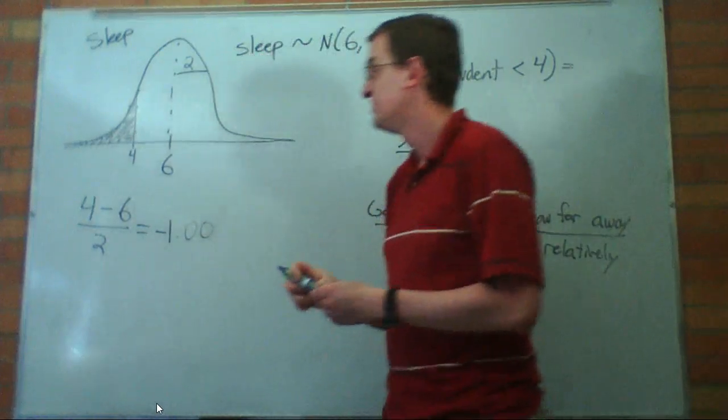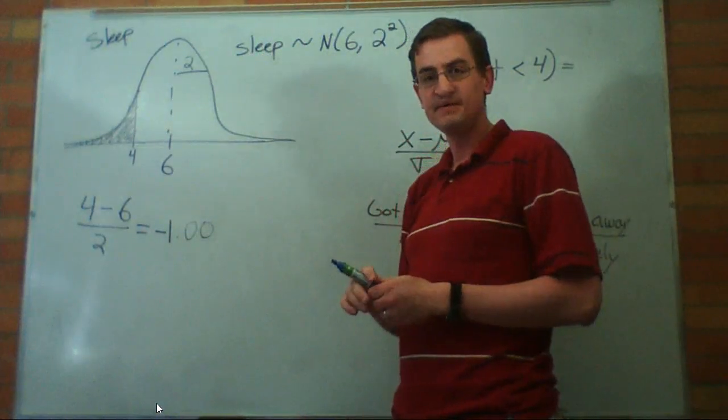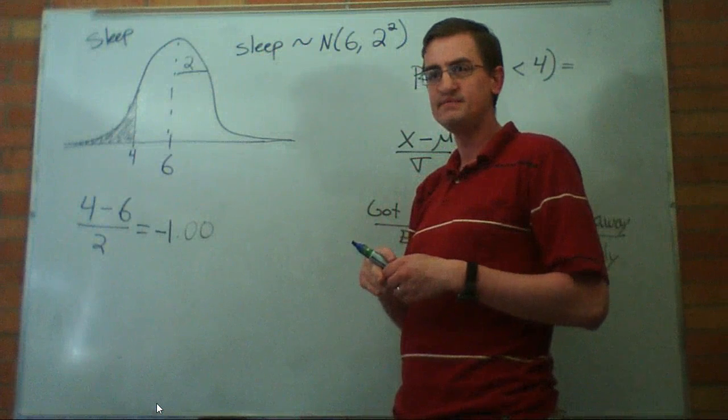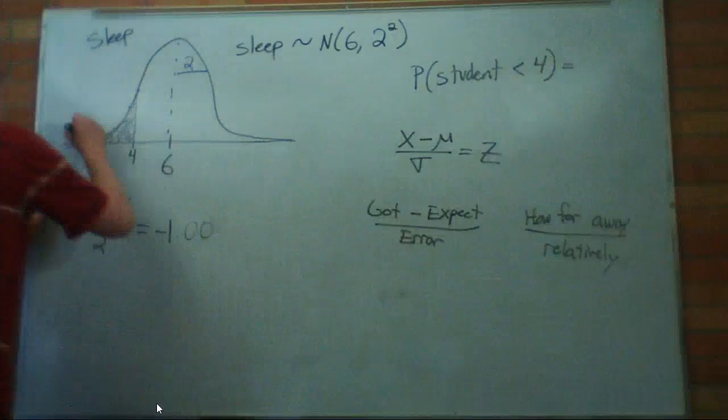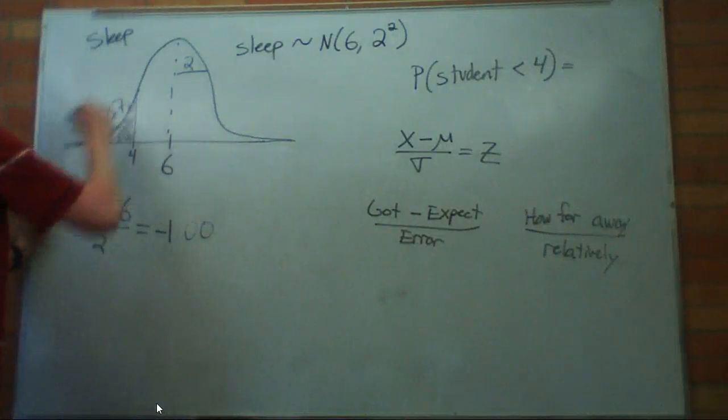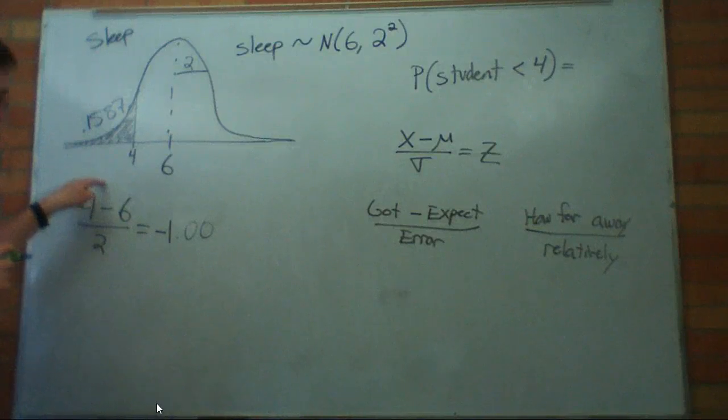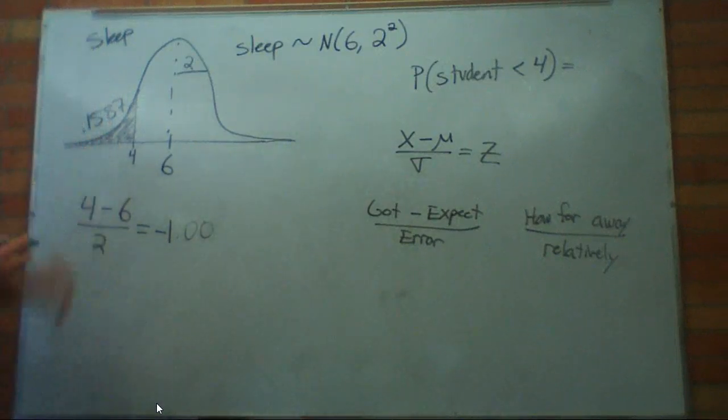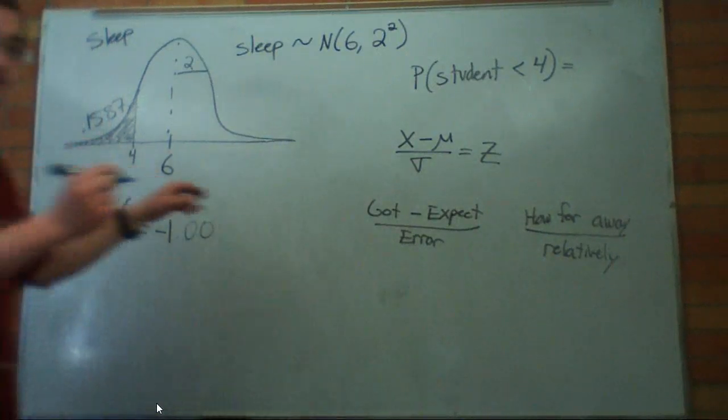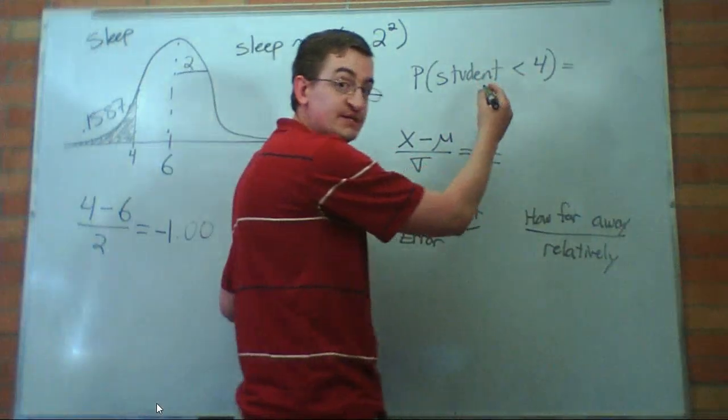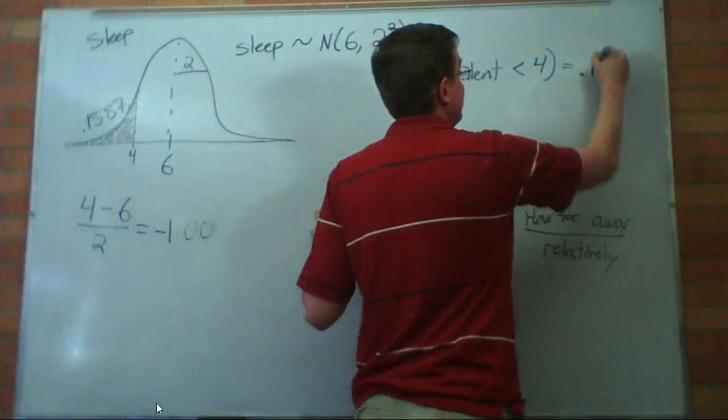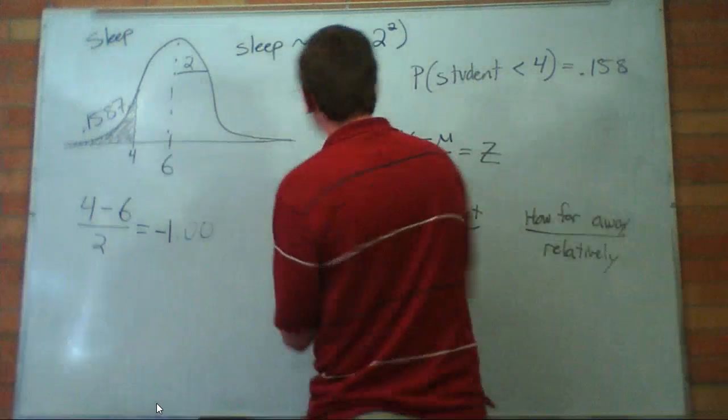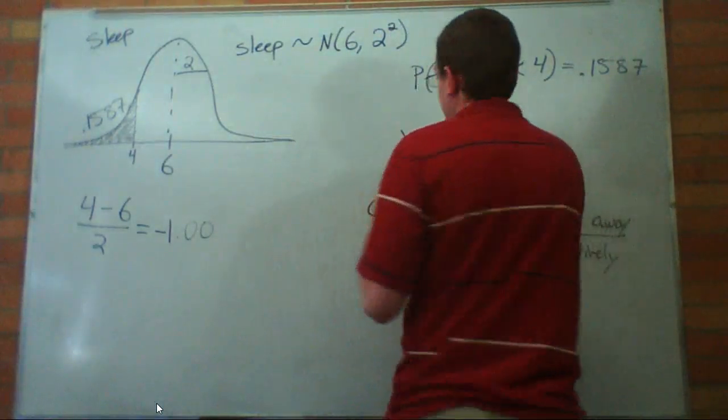And that gave me a probability of 0.1587. Was it 0.1587? Does this look like it's just over 15 percent? I think yeah, that's pretty reasonable. I'm not the greatest artist, but even I can see that seems like a pretty reasonable answer. So that's what we have right here. The probability that a student gets less than four hours of sleep is 0.1587.